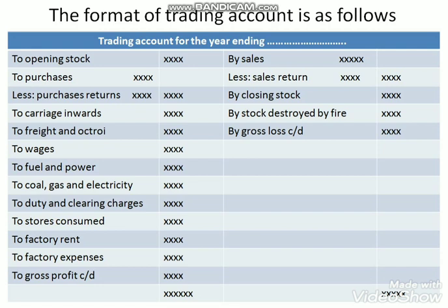Duties and clearing charges are directly connected with purchases, so they are entered in the trading account. Next is stores and consumables — items like cotton waste, grease used in the manufacturing process are directly connected with purchases and sales, so they are entered in the trading account. Next is factory rent and factory expenses, which are direct expenses, so they are also entered in the trading account.